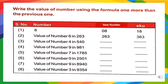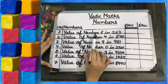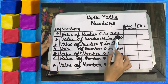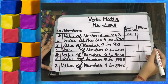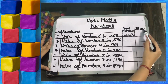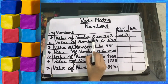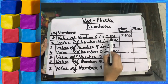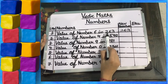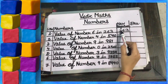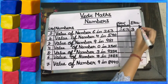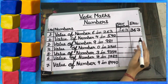Question 1: Write the value of numbers using the formula '1 more than the previous one.' First part — value of number 6 in 263. We write the number 263. We need to find the Ekadiken Purven, which means plus 1 in the previous digit. The previous digit of 6 is 2, so we put a dot on 2. This dot means plus 1, so 1 plus 2 is 3. The 6 remains the same and this 3 also remains the same. So the answer is 363.